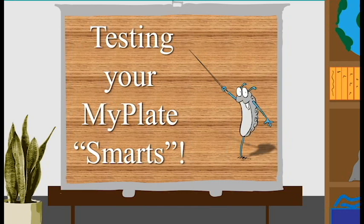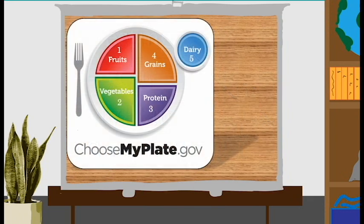All right. Are you ready to test your MyPlate skills? Cerebrum has designed a few questions to see if you will be able to put specific foods into the correct section of MyPlate. He has labeled them fruits number one, vegetables number two, proteins number three, grains number four, and dairy number five. So let's see if you know which foods go in which groups.